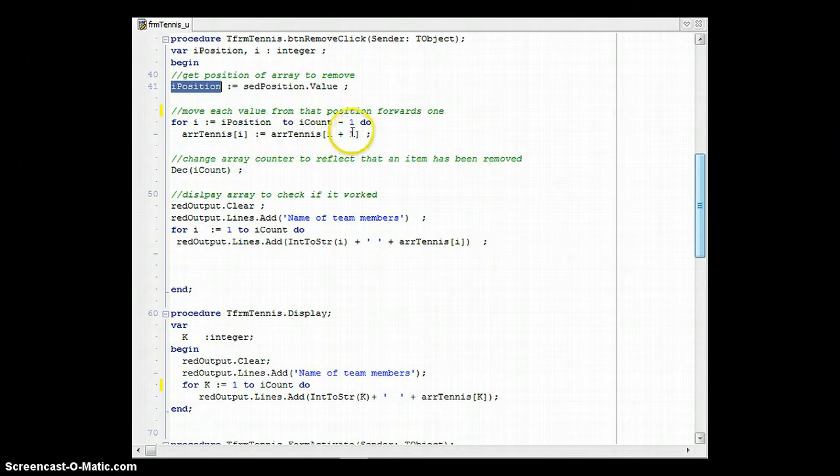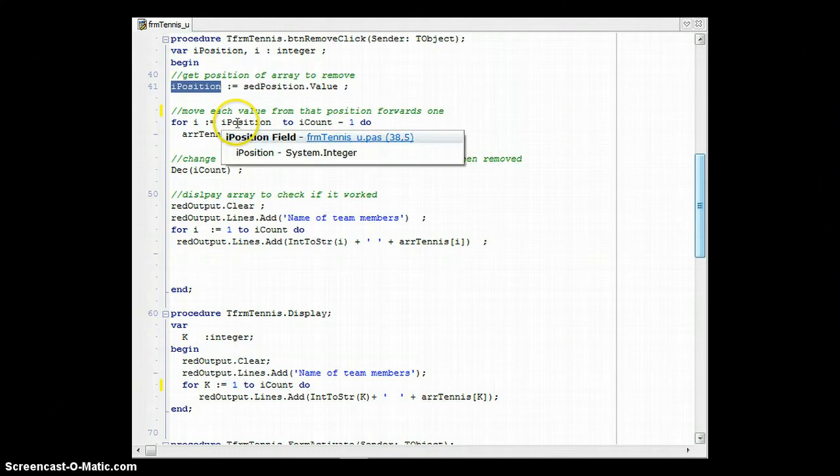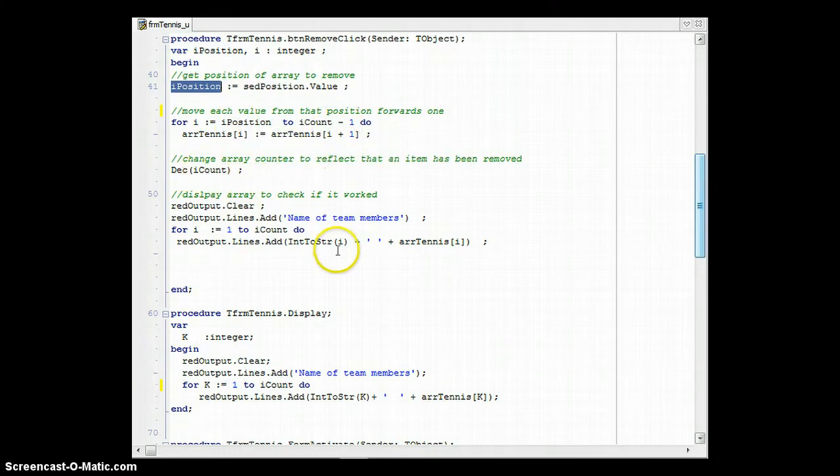And we are basically moving forward the value. So for example, whatever is in position 3 will now be whatever was in position 4. So number 4's value shifts to position 3, number 5's value shifts to position 4. So everything moves forward. And once it's done that, from the position that we want to start until the end of the array, we then decrease the counter, the array counter, by 1. Because we've removed an element, so there should be one less element in our array.